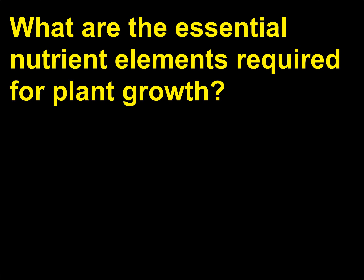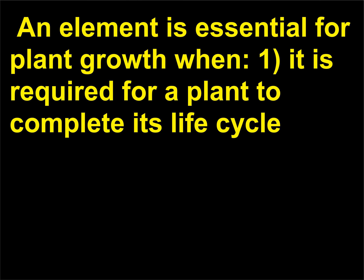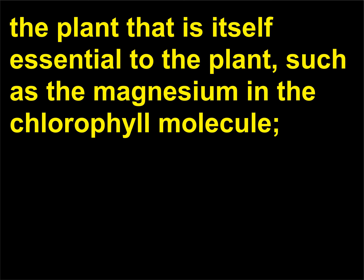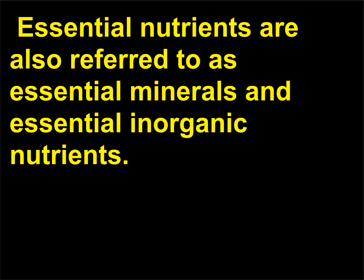What are the essential nutrient elements required for plant growth? Essential nutrients are chemical elements that are necessary for plant growth. An element is essential when: (1) it is required for a plant to complete its life cycle and produce viable seeds, (2) it is part of a molecule or component of the plant that is itself essential, such as the magnesium in the chlorophyll molecule, and (3) the plant displays symptoms of deficiency in the absence of the element. Essential nutrients are also referred to as essential minerals and essential inorganic nutrients.